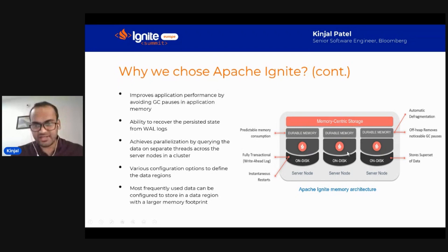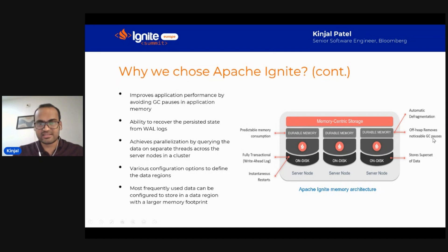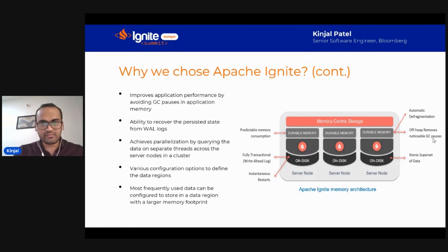Here is the graphical representation of Apache Ignite memory architecture. These are different server nodes — node one, two, and three — forming an Ignite cluster. It stores data onto physical memory, maintains full write-ahead logs for transactions, and has memory-centric storage that transfers data between off-heap and on-heap memory. Critically, it removes noticeable GC pauses — it doesn't share GC pauses with the application process, so both run in separate memory regions. That's why we noticed a significant improvement in performance.